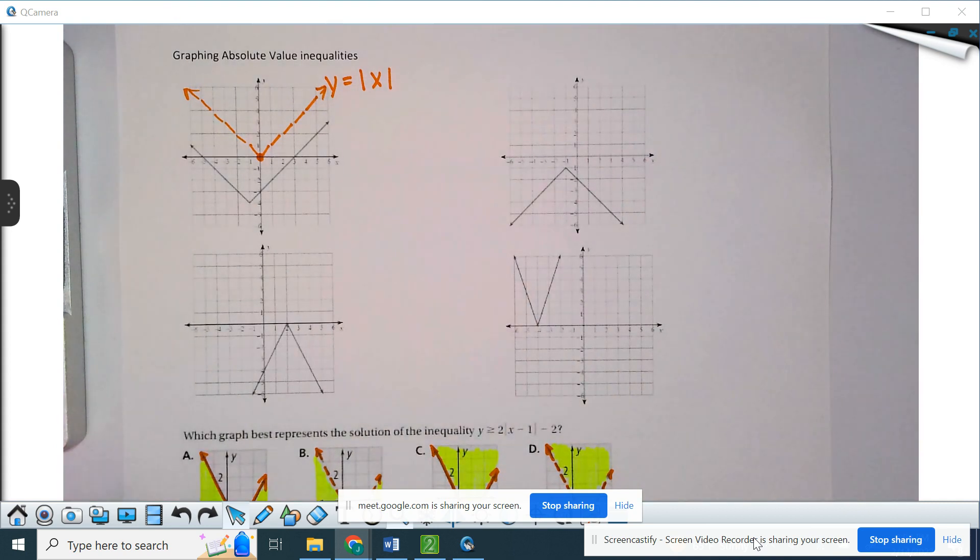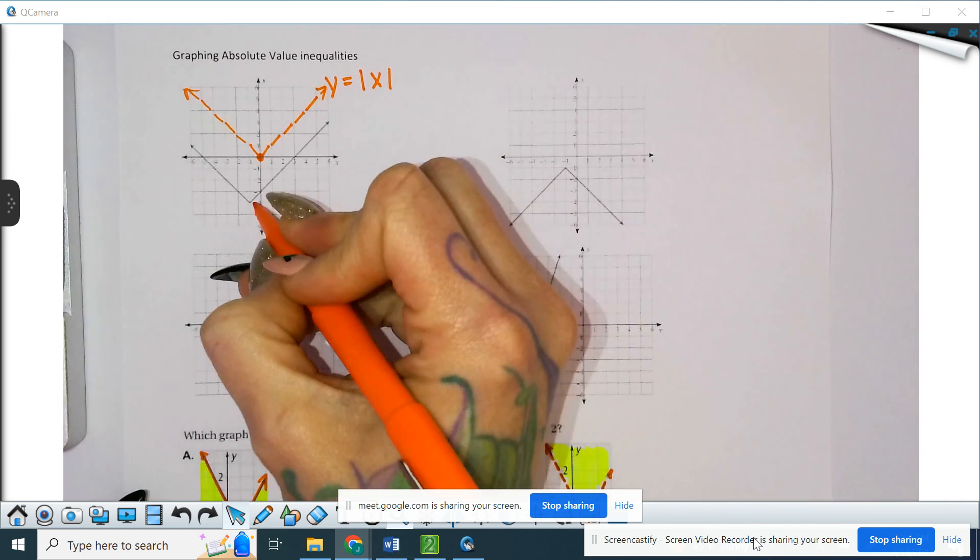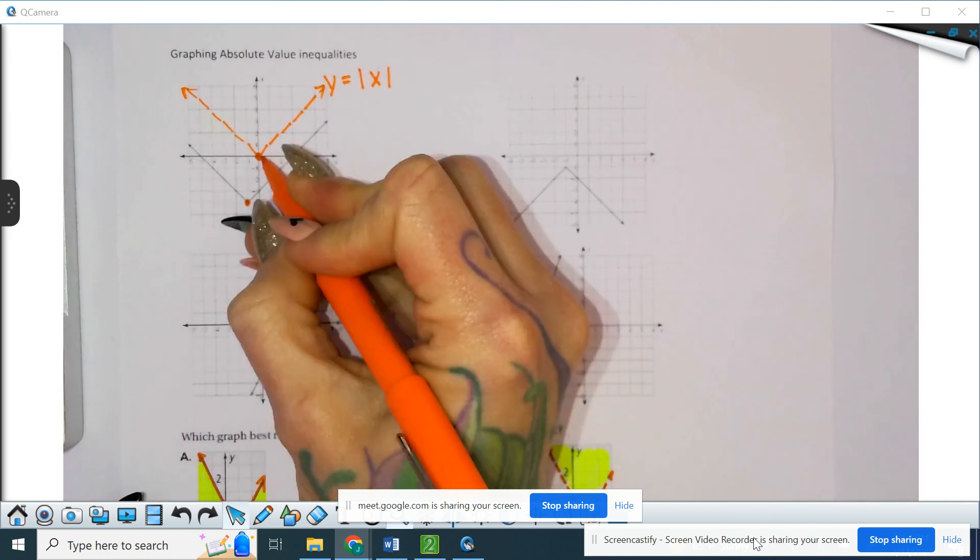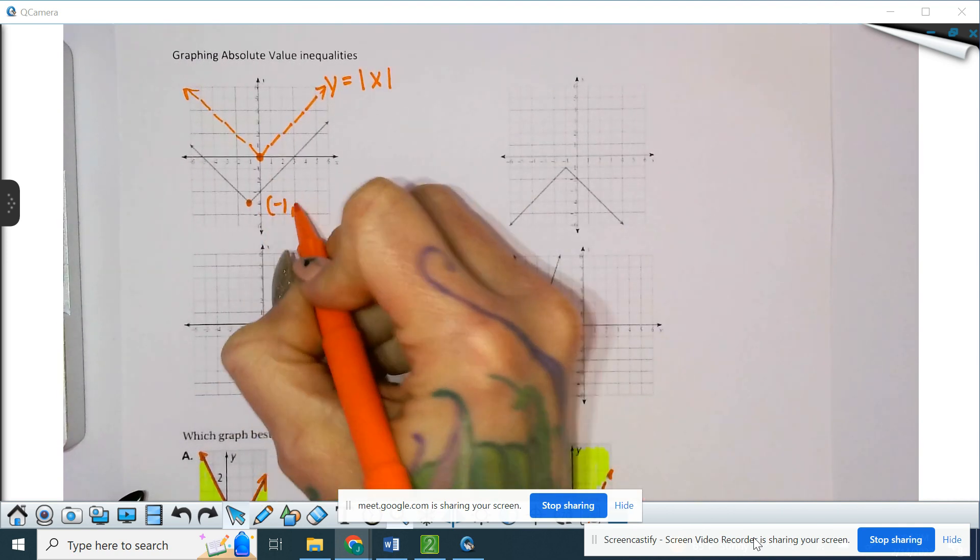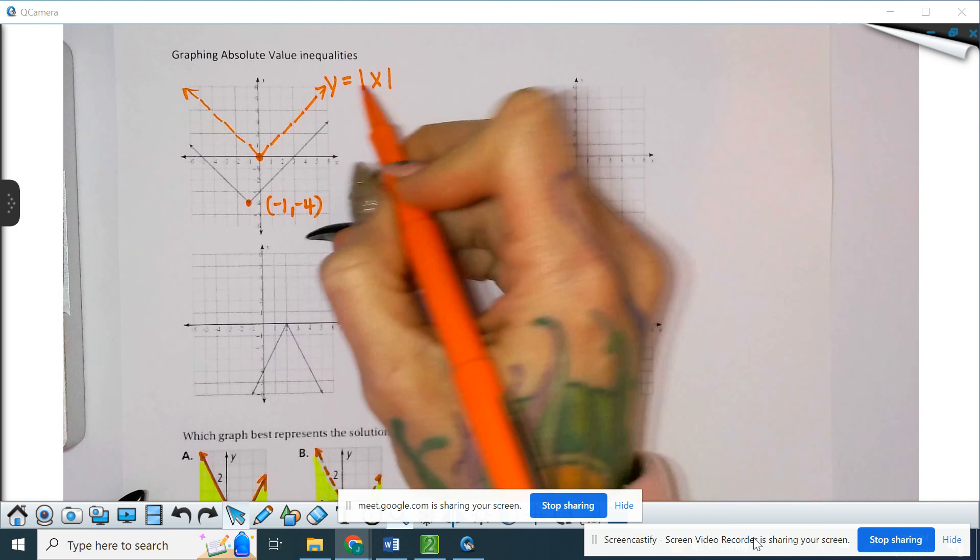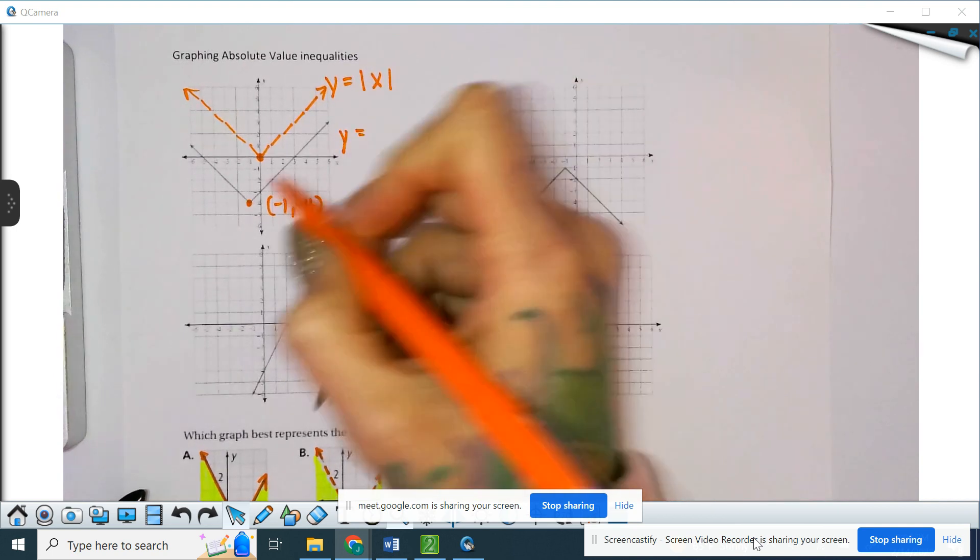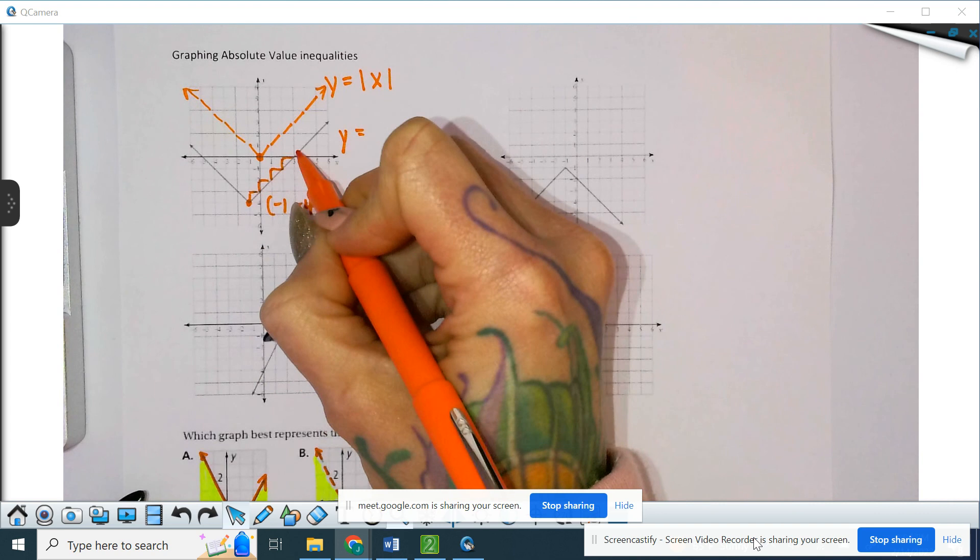You can use Desmos to help with that because at no point will you not have access to Desmos. In this case, you're looking at this function down here. We have a negative 1, negative 4 as our vertex. If we're looking at our formula, it's still a 1 to 1 rate of change.